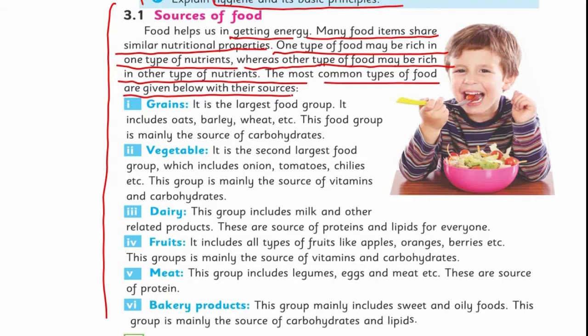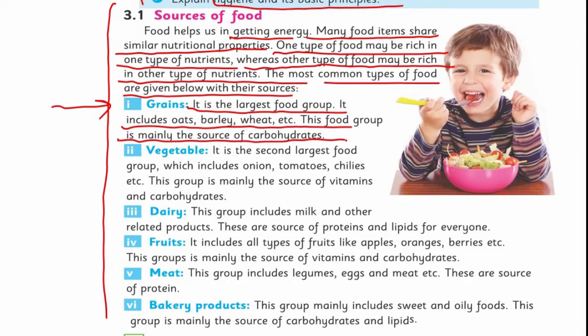The first group is grains. Grains are food items like wheat, barley, corn, and maize. It is the largest food group and includes oats, barley, and wheat. This food group is mainly the source of carbohydrates. So remember, dear students: grains provide carbohydrates. Moving on to vegetables — vegetables is the second largest food group.